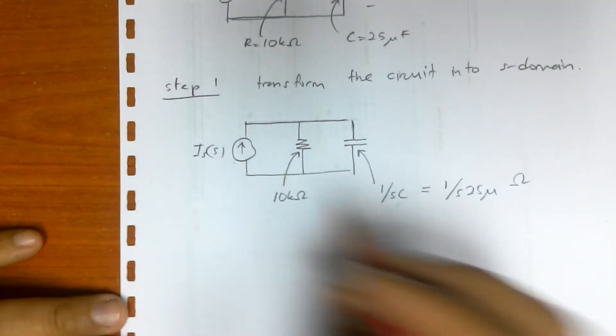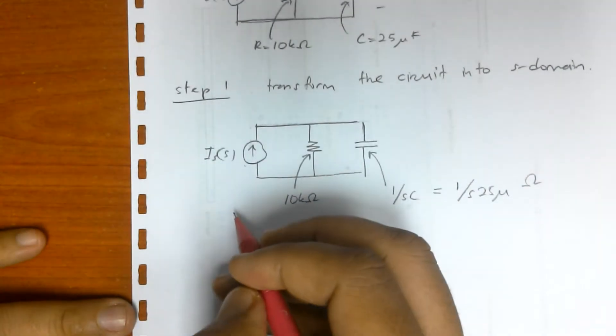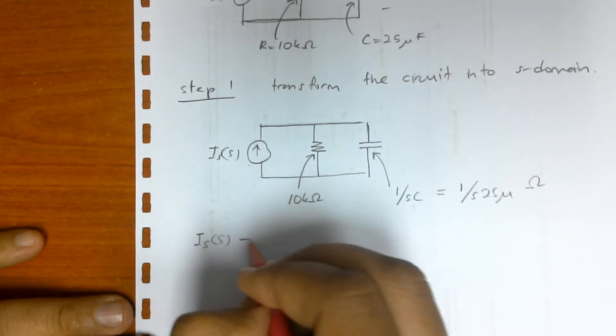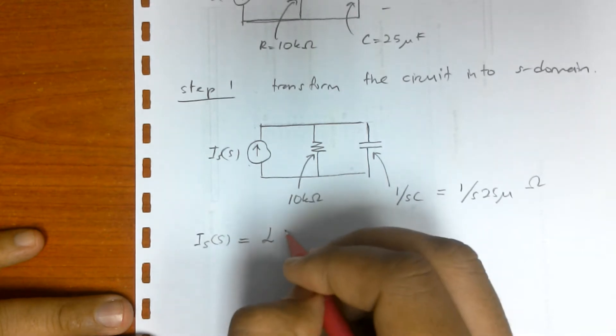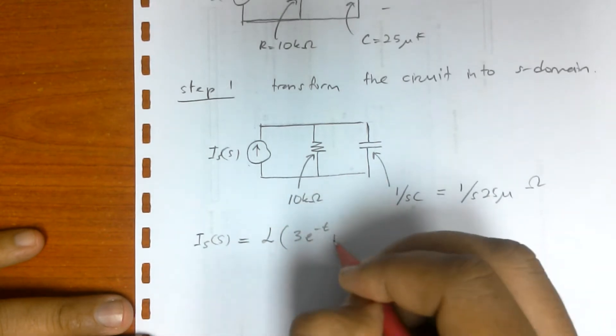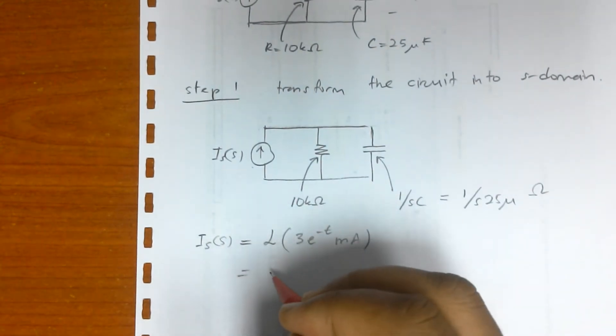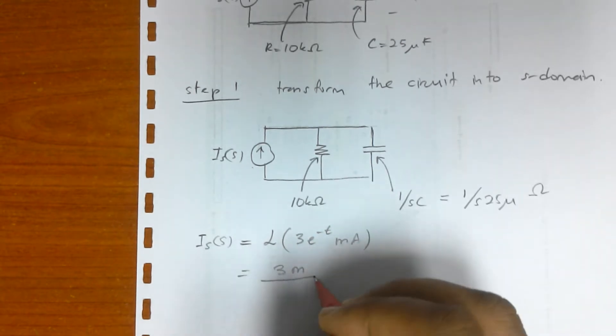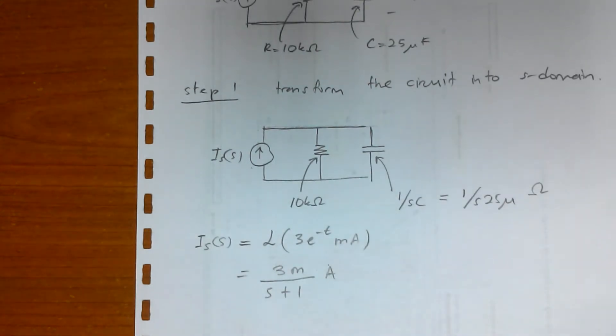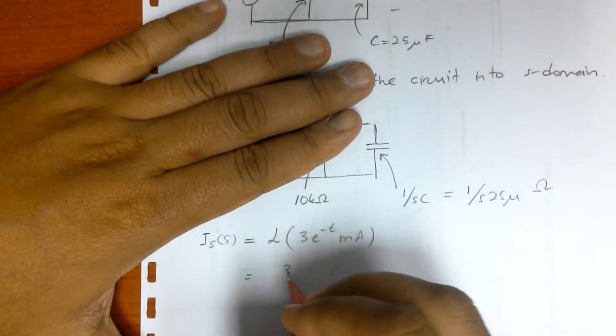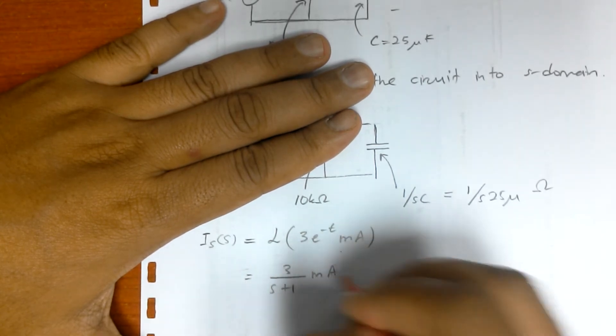So now in S here, we have to do the Laplace transformation. I of S equals to Laplace transform of, don't forget the mA. So we will get 3 over S plus 1 mA.